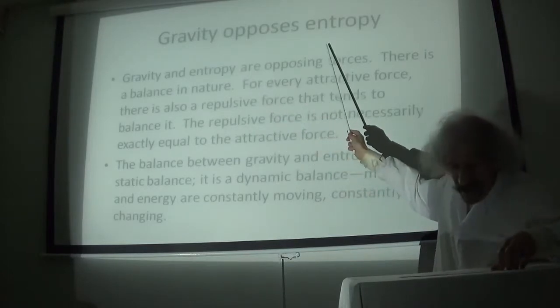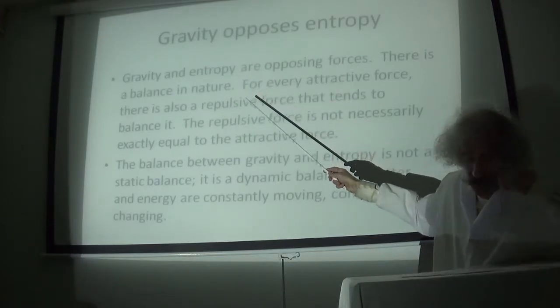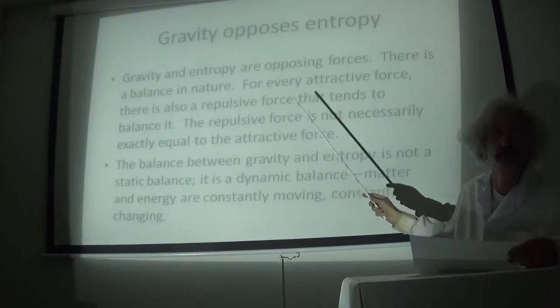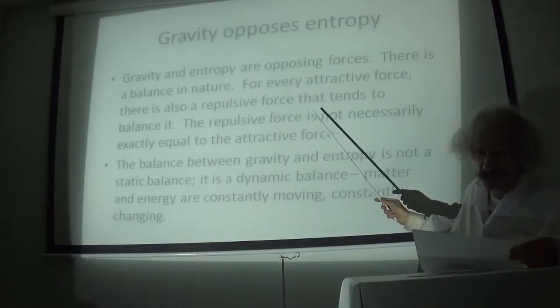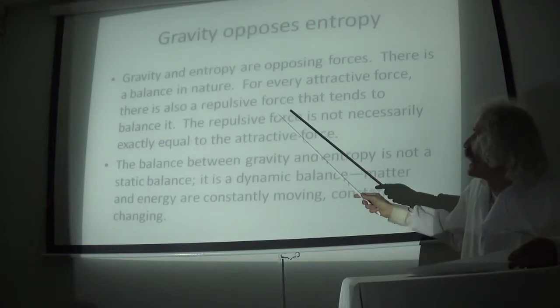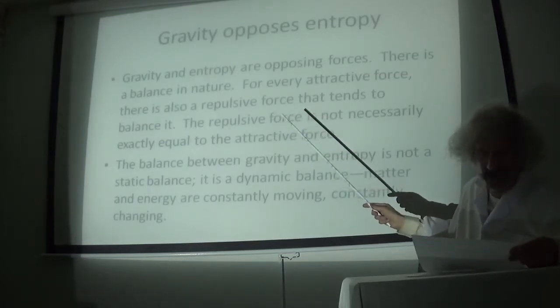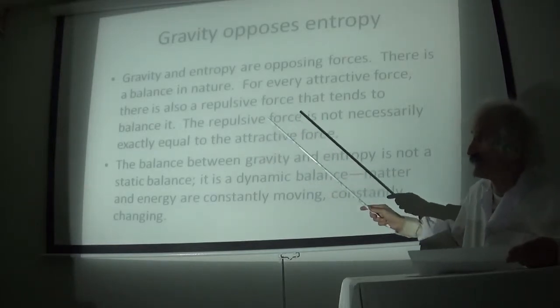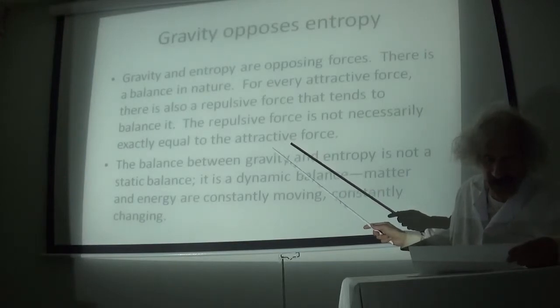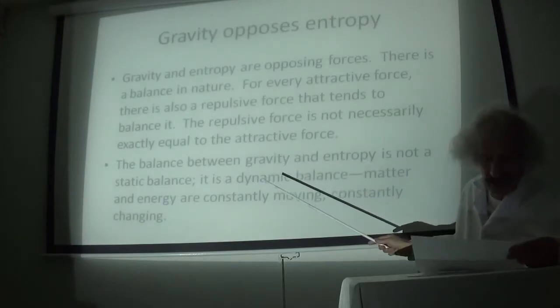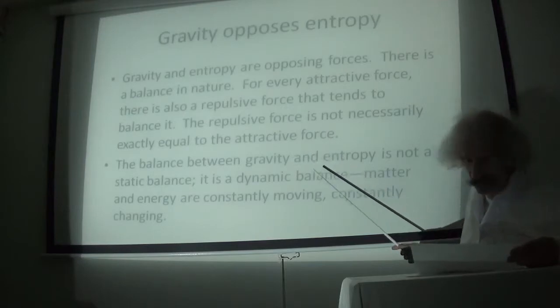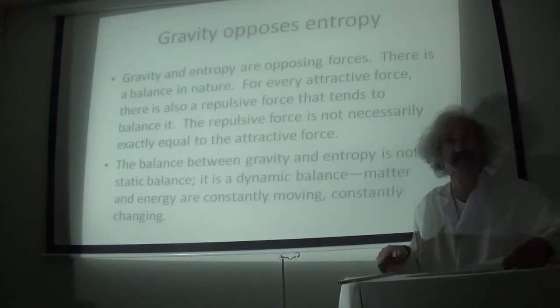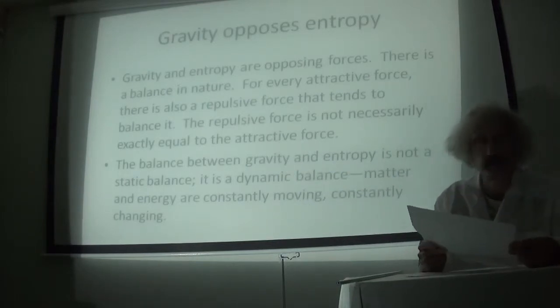Gravity opposes entropy. We see that gravity and entropy are opposing forces. There is a balance in nature, and for every attractive force, there is a repulsive force that tends to balance it. However, these forces are not necessarily exactly equal. Entropy may not be exactly equal to gravity at any instant. The balance between entropy and gravity is not a static balance, it's a dynamic balance. Matter and energy are constantly changing, constantly moving.